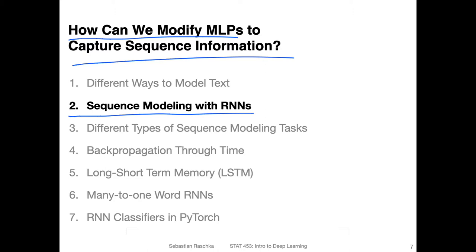The answer is no. There are two types of sequence information that might be encoded in our training set. One type is across the training example axis, and the other type is across the feature axis. To illustrate that, let's revisit the iris dataset, which is a nice simple dataset to illustrate these types of problems.